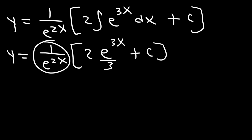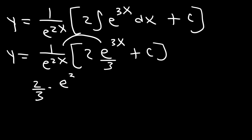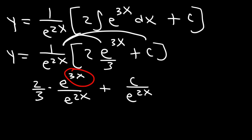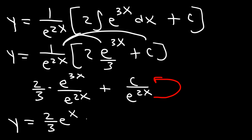Now let's distribute 1 over e to the 2x to both terms. We get 2 over 3 times e to the 3x divided by e to the 2x. When dividing with a common base, subtract the exponents: 3x minus 2x equals x. So y equals 2 over 3 times e to the x. And moving e to the 2x from the denominator gives plus c times e to the negative 2x. This is the final answer.